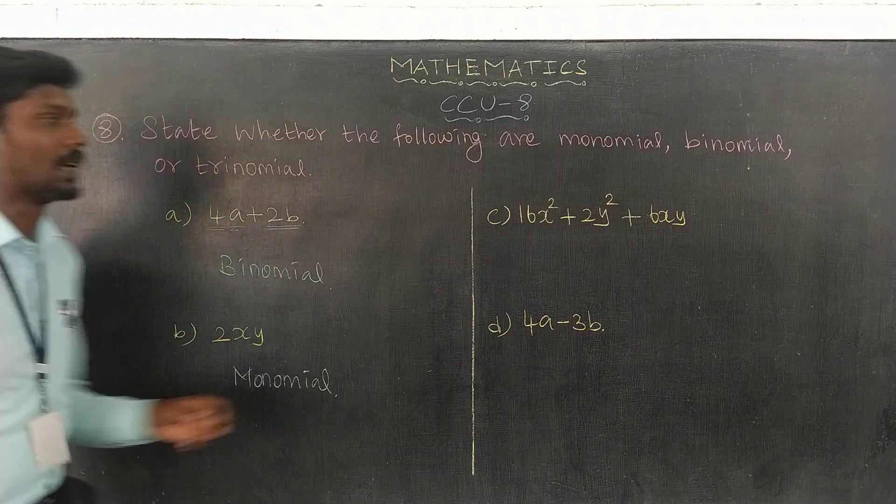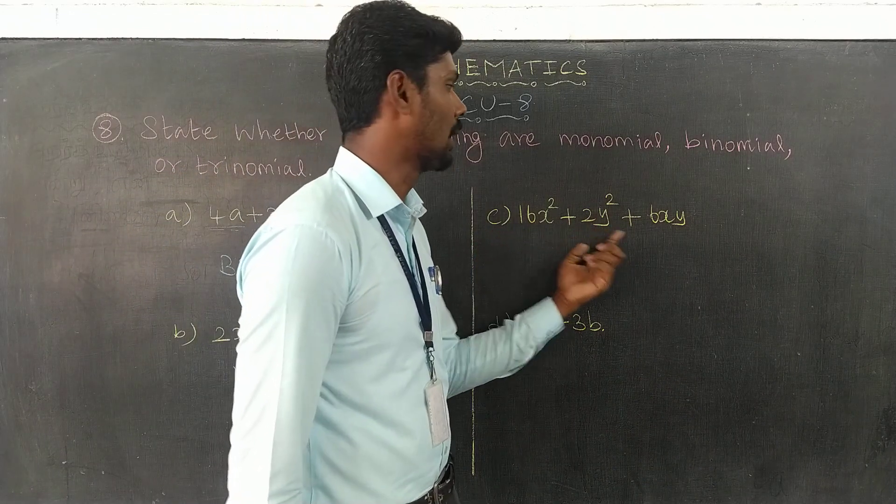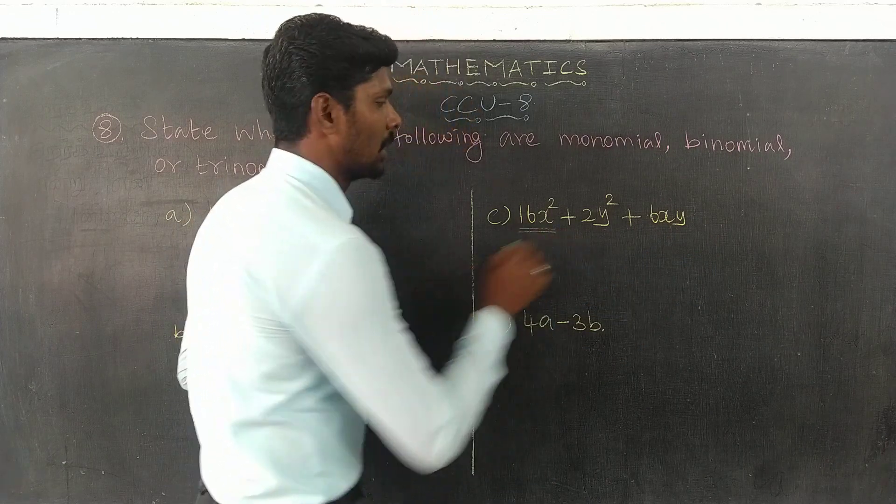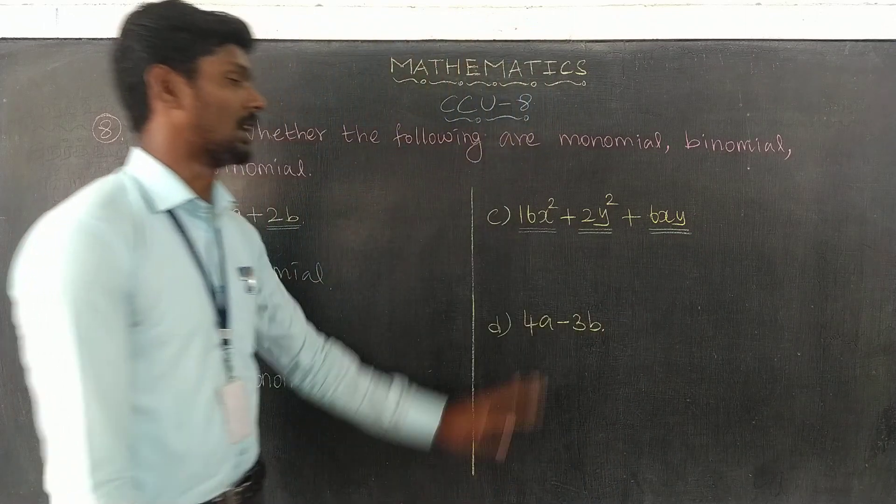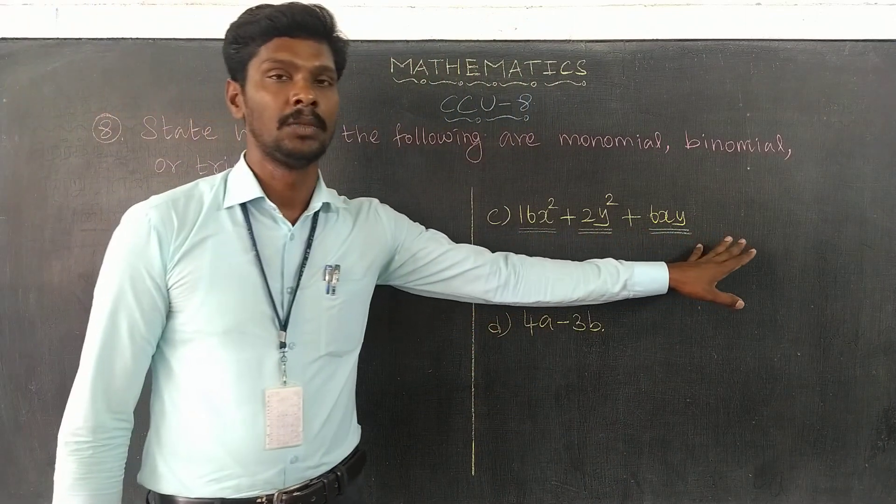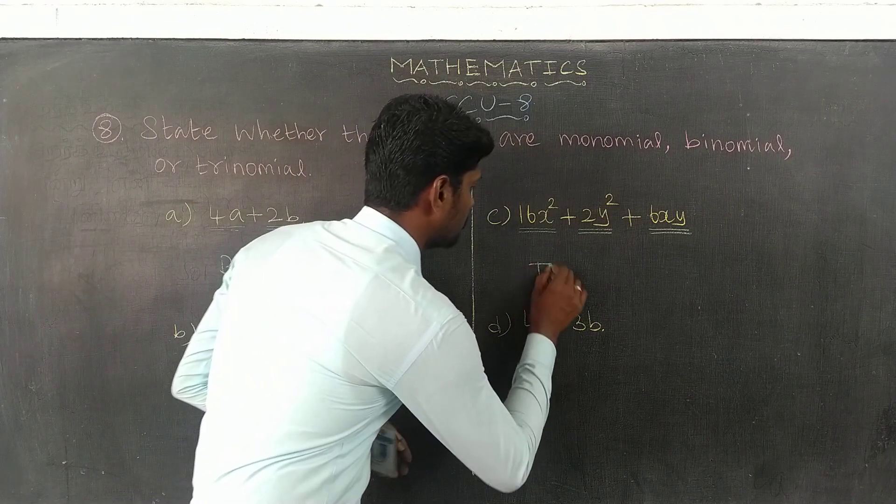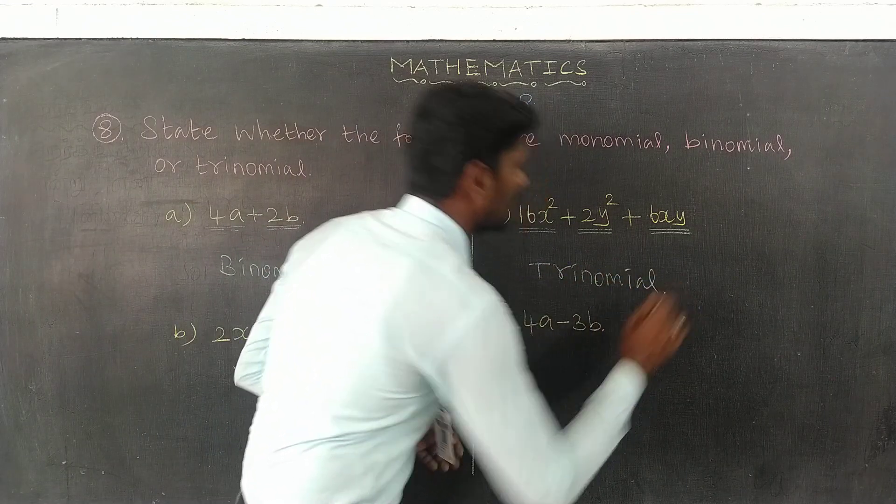Next, 16x squared plus 2y minus 6xy. Three terms, so it is trinomial.